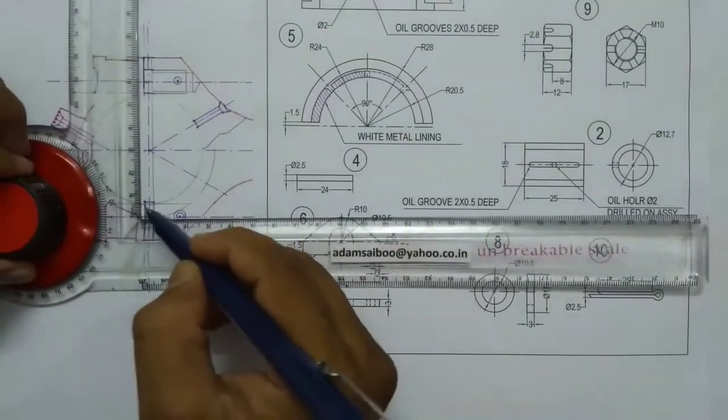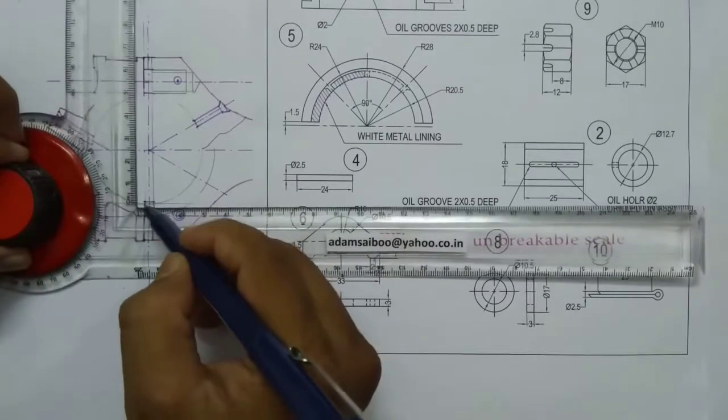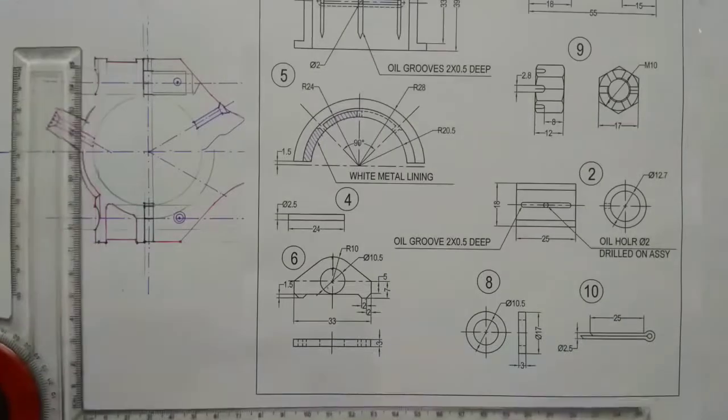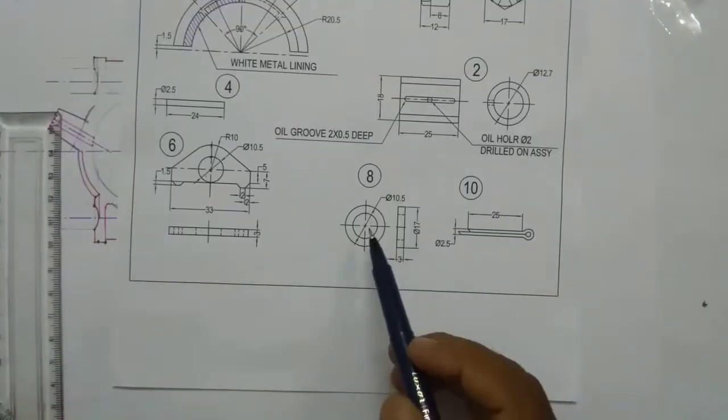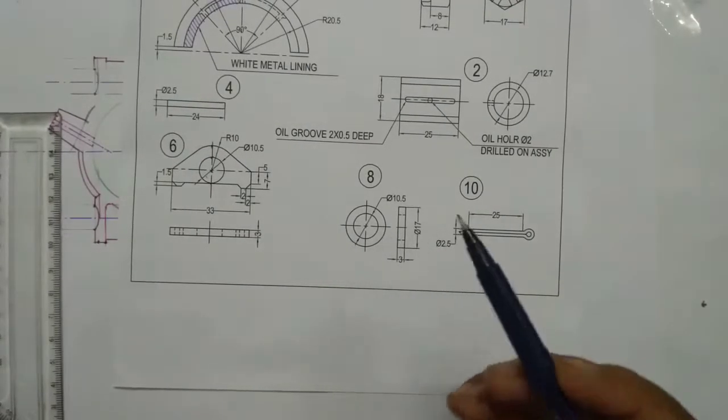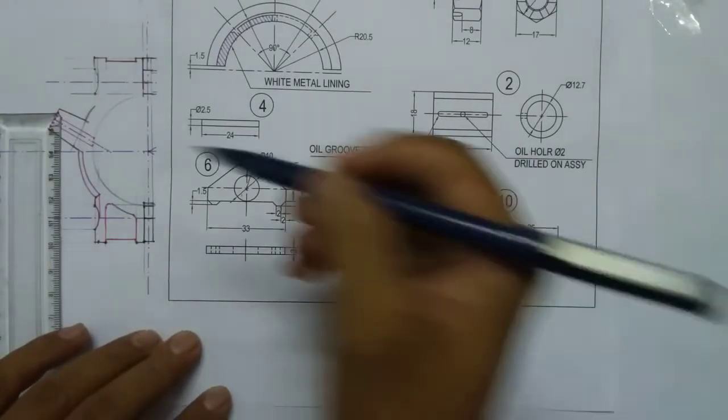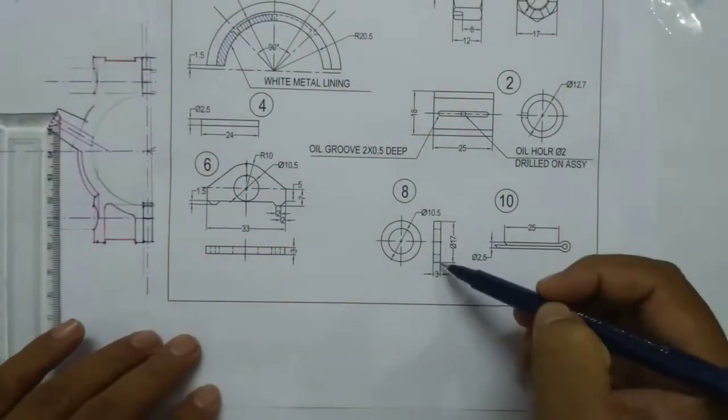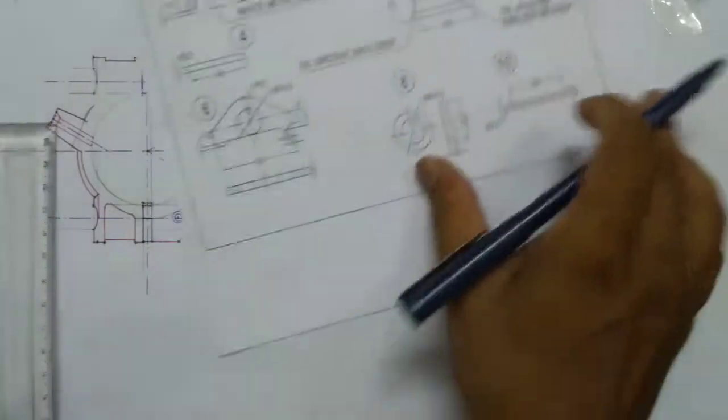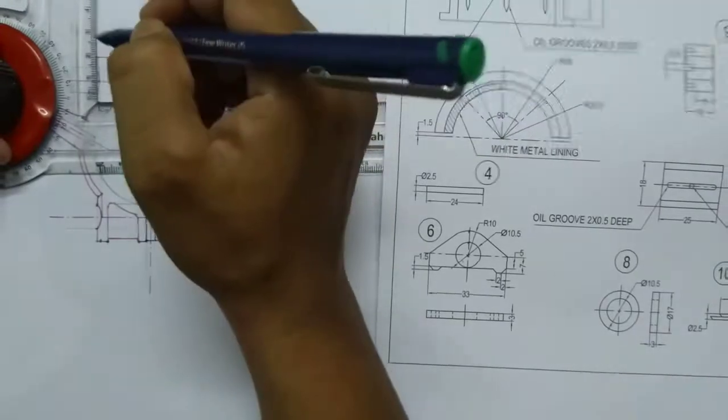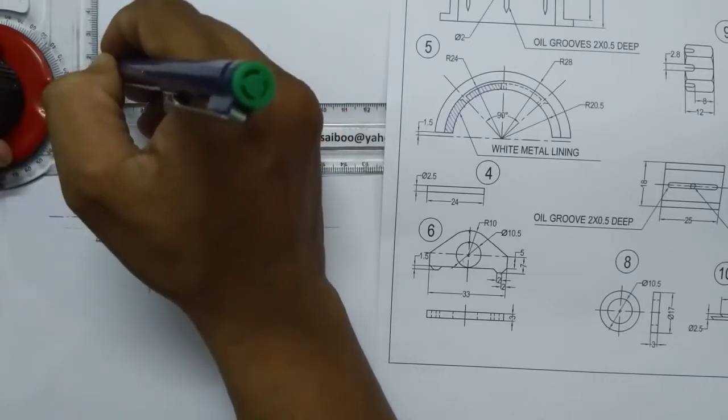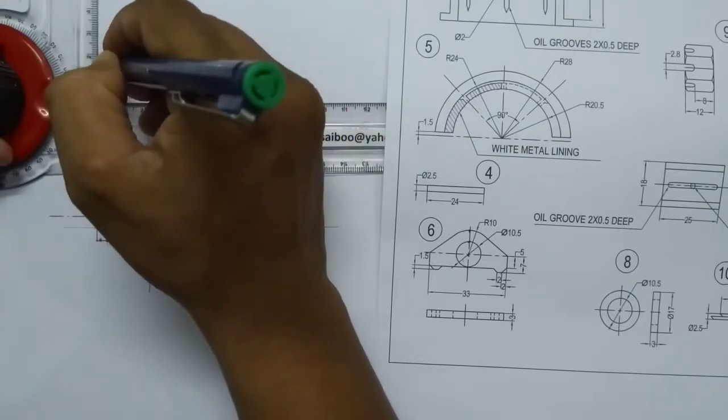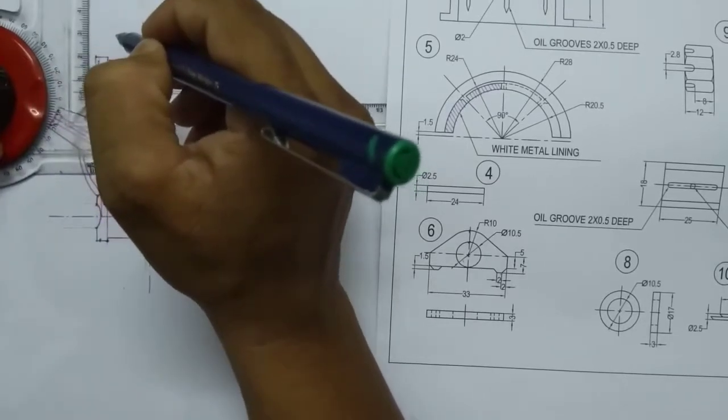I'm going to draw this part, part number 8, washer which is going to sit over here. This point will match here, so the height is 17mm. Half of it is 8.5, the thickness is 3mm.